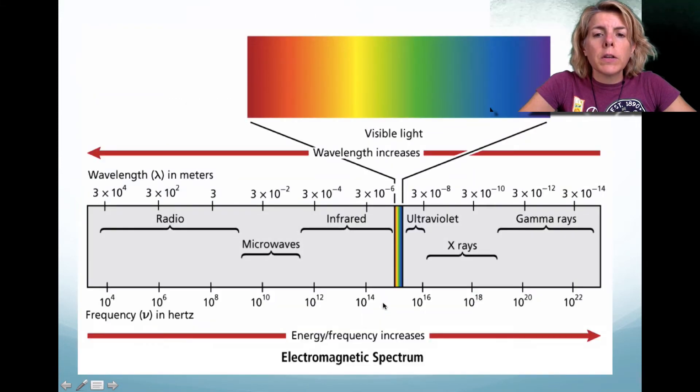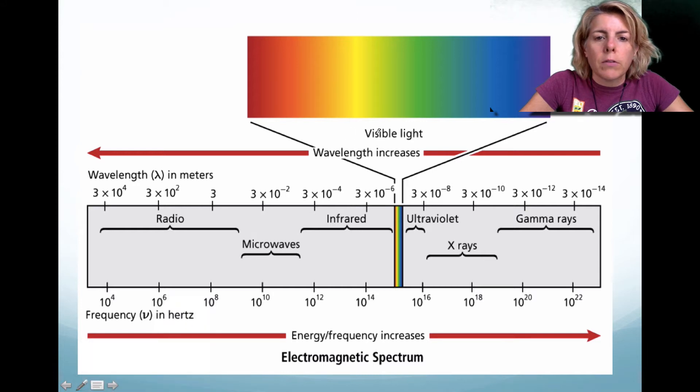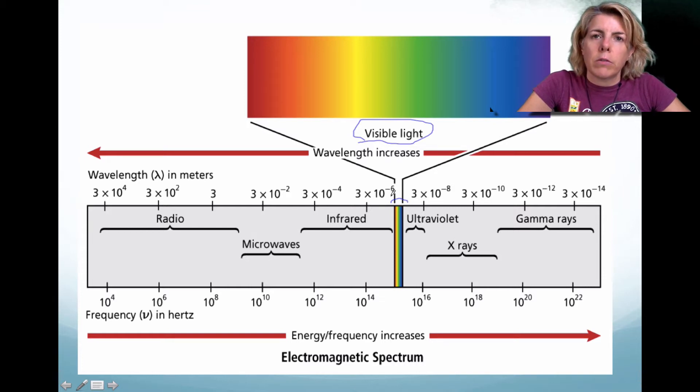Okay, here is an electromagnetic spectrum. Here we have visible light. Visible light is essentially colors, the rainbow. Notice that it occupies a very tiny space within the electromagnetic radiation. And it is continuous. We're going to talk about why that matters. As you go from right to left, notice that wavelength increases. As you go from left to right, notice that frequency increases.